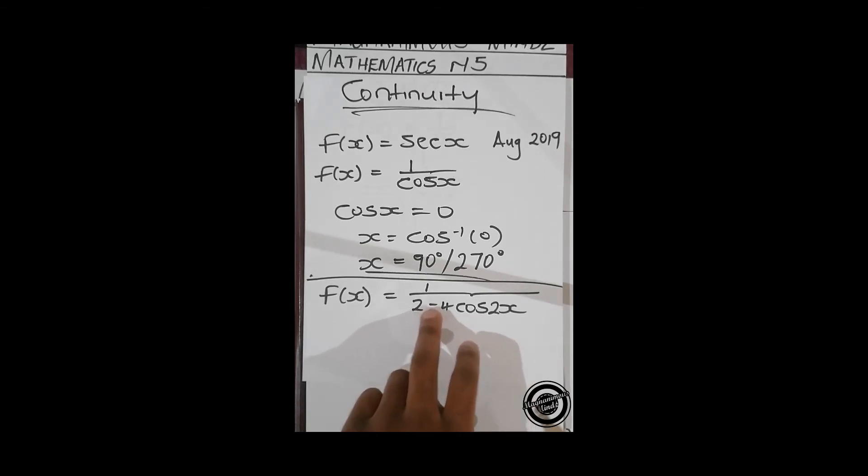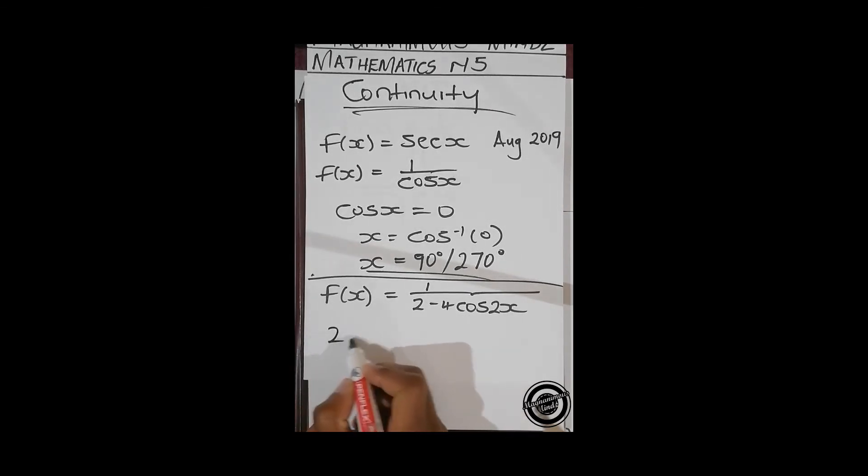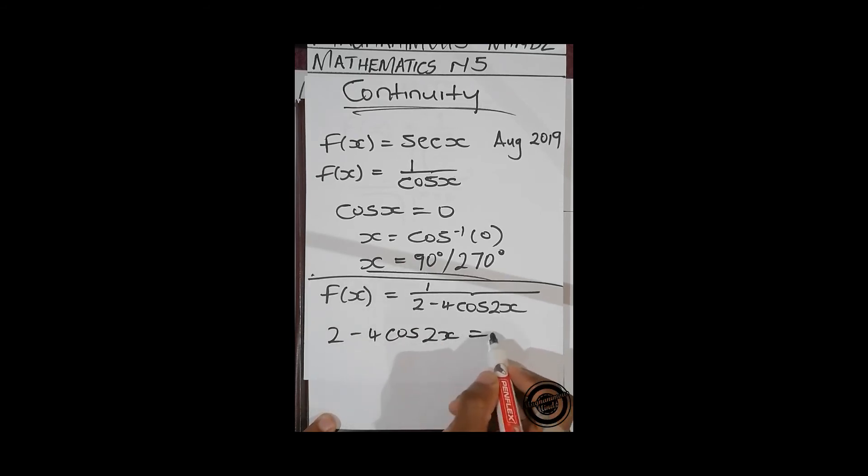You've got to set the denominator equals to zero and solve for x. That's whereby you're going to get zero in the denominator and that's where your function will be undefined, meaning that's where it's going to be discontinuous.